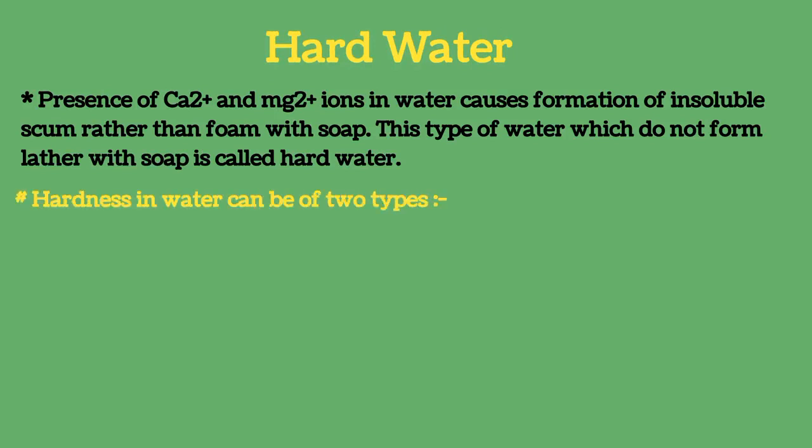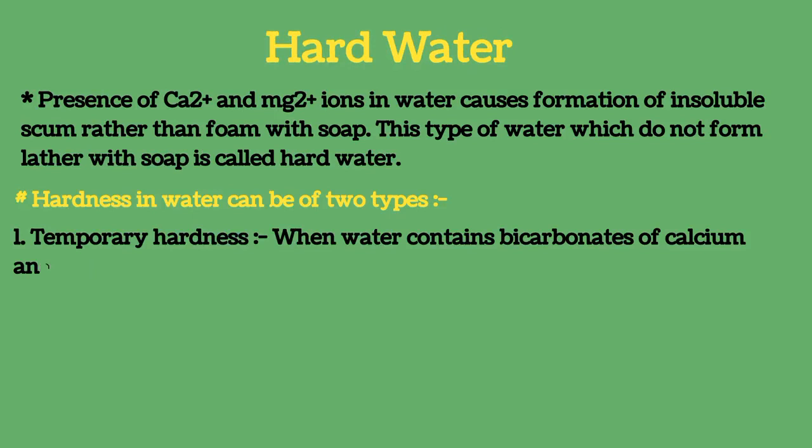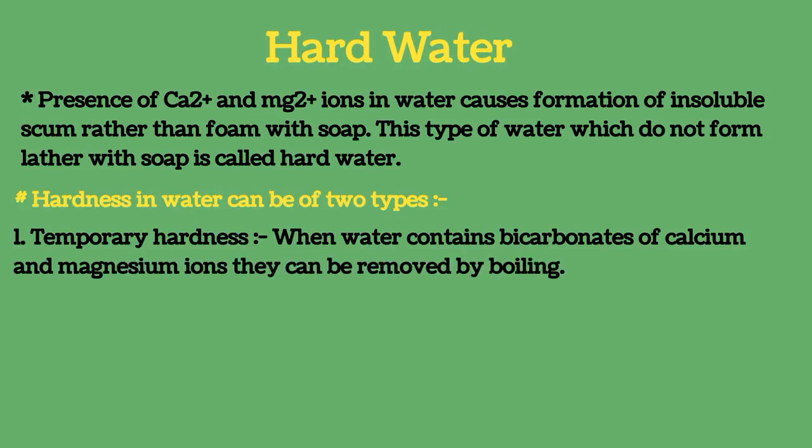Hardness can be of two types. Temporary hardness: when water contains bicarbonates of calcium and magnesium ions, they can be removed by boiling.